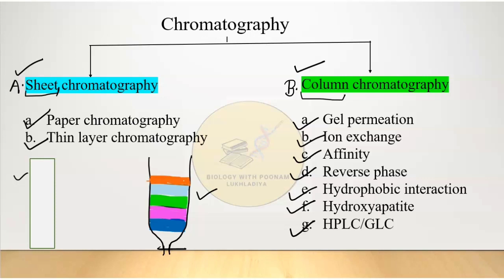To summarize: on the basis of stationary phase, chromatography is divided into sheet chromatography and column chromatography. Sheet chromatography is further divided into paper chromatography and thin layer chromatography. Column chromatography is further divided into seven types. We will study the principles and applications of each, relevant to the CSIR-UGC Life Sciences paper code CQP17.